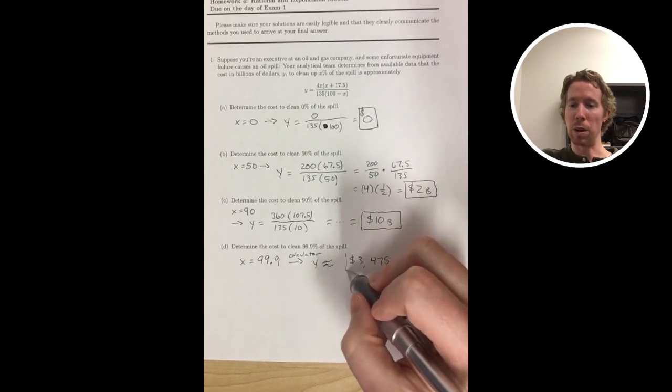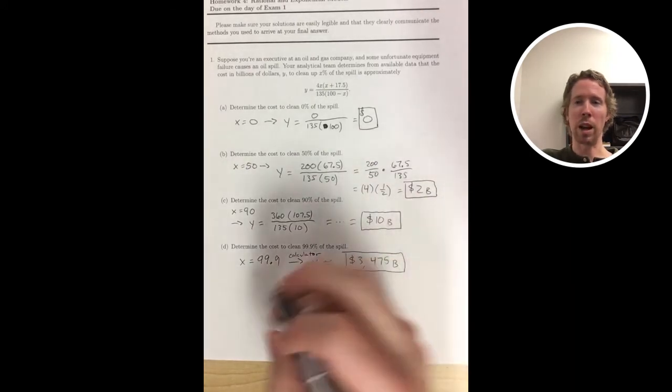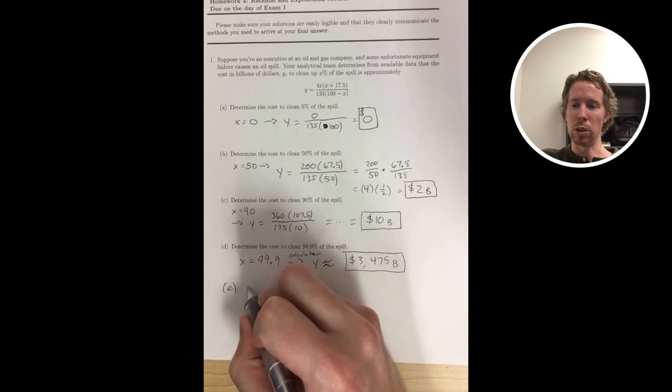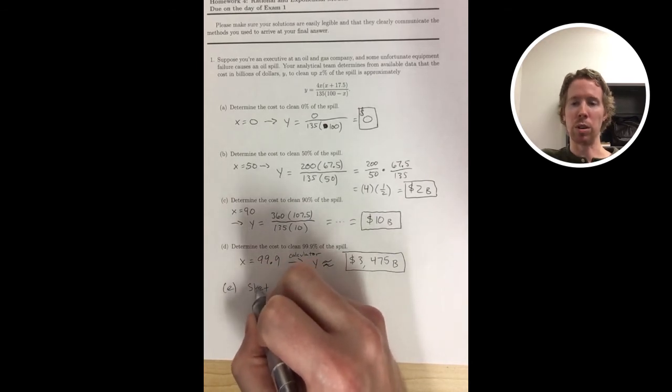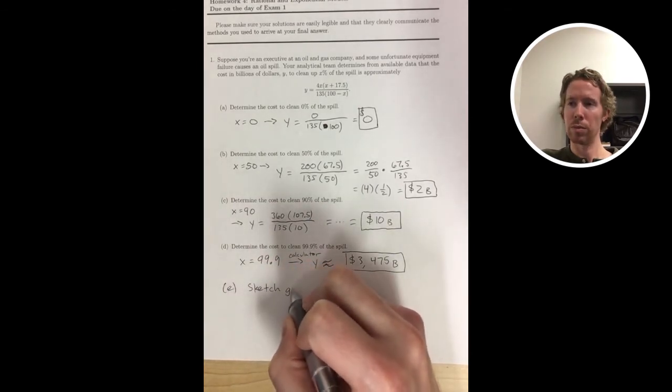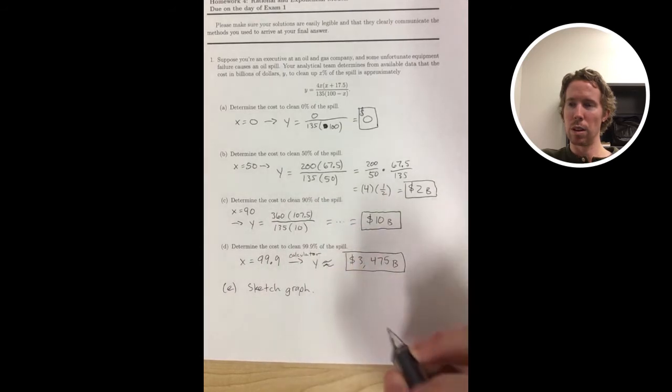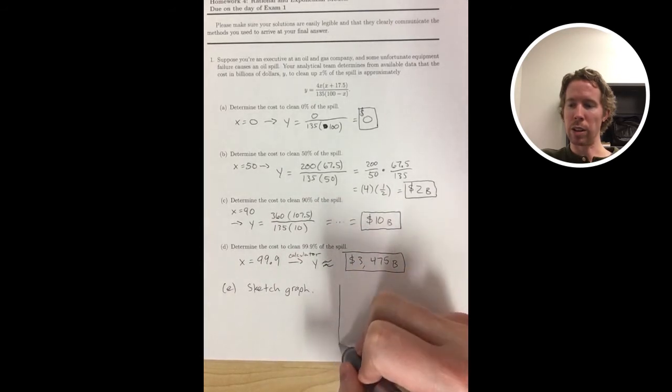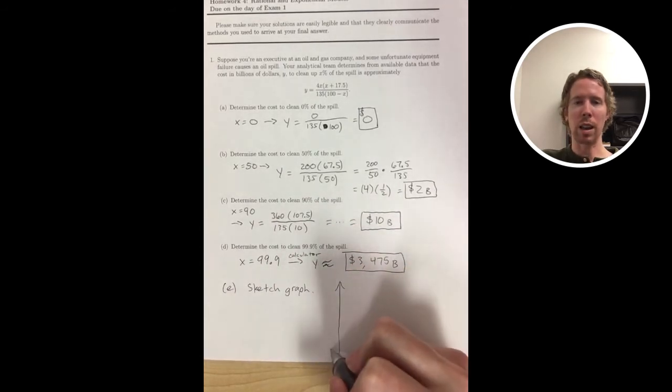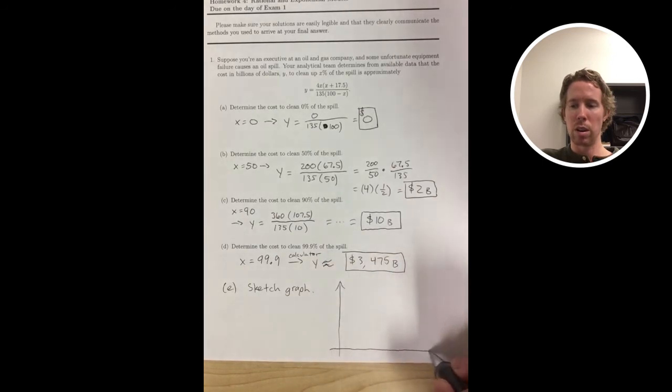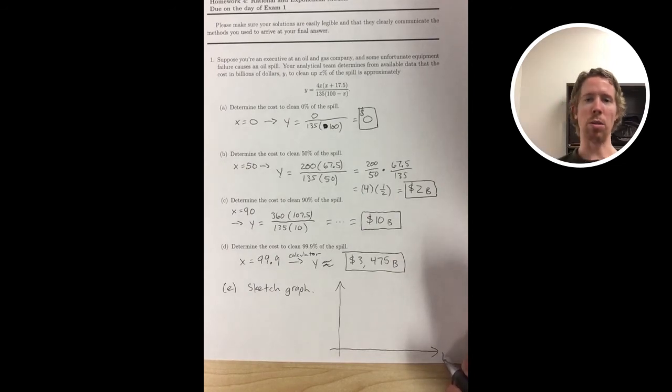And in Part D if you punch in 99.9% of the spill you get out over three trillion dollars. So now to sketch the graph we're not going to worry about that last point. I'm just going to scale it with the first three points. So I'll just make the Y values go up to 10 billion.